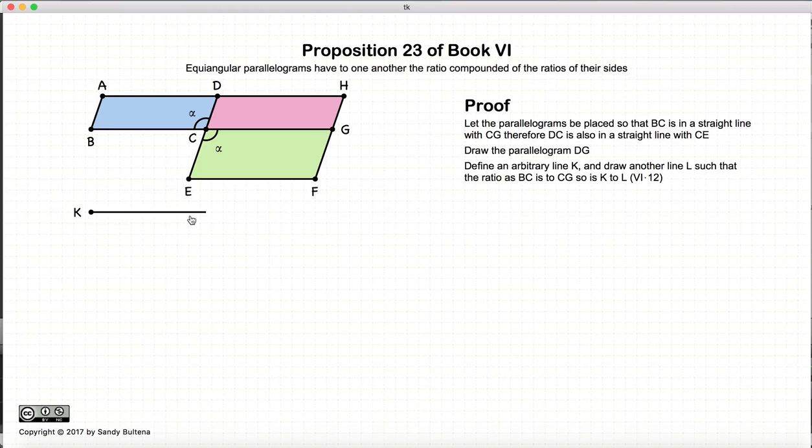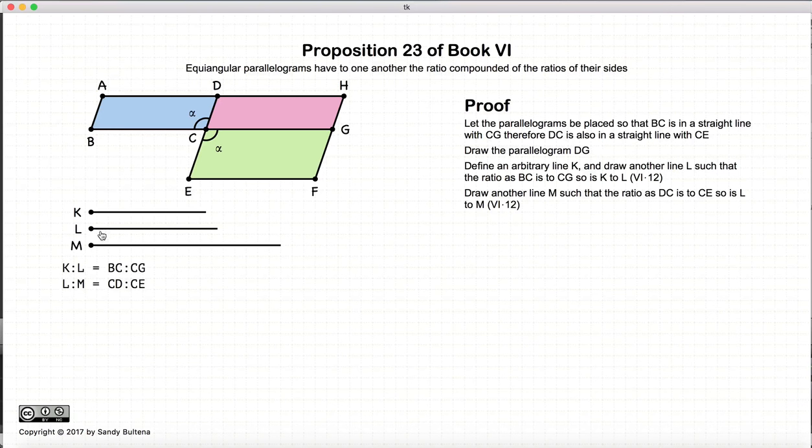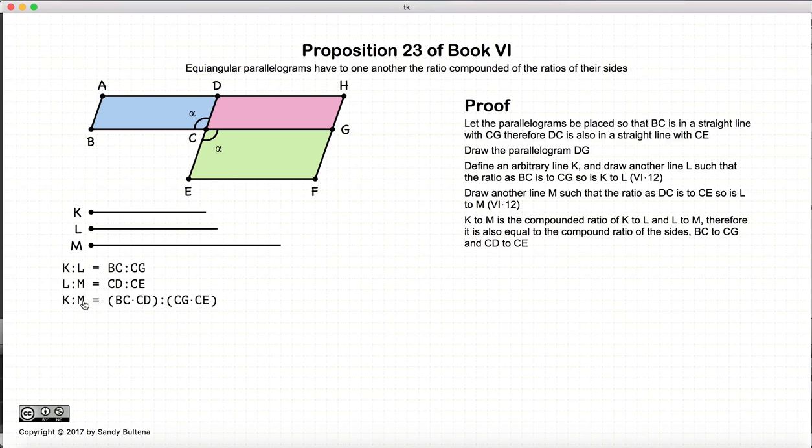So we start with the line K. And then using the Propositions 12 of Book 6, we're going to construct another line L, such that the ratio of BC to CG, so the ratio of this line to this line, will be equal to the ratio of K to L. So now we have K to L is equal to BC to CG, which are these lines here, BC to CG. And we're going to do this again, and we're going to construct another line M, such that the ratio of L to M is equal to CD to CE. So it'll be the ratio of these two lines. So these three lines simply represent the ratios of BC to CG and DC to CE.